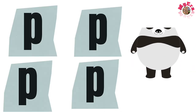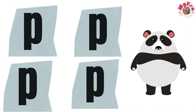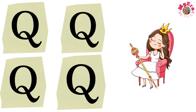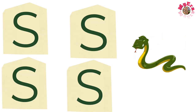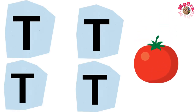P for panda, Q for weed, R for rainbow, S for snake, T for tomato.